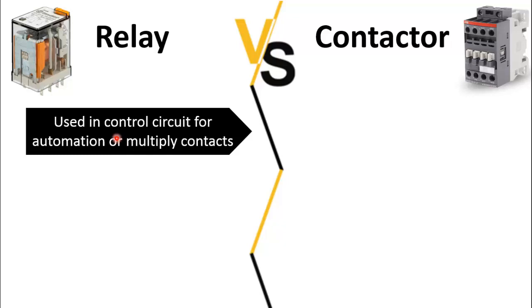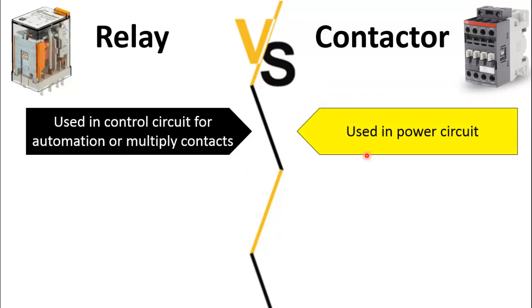A relay is used in control circuits for automation and also to multiply the contacts — you can have multiple normally closed and normally open auxiliary contacts in a relay. In order to use it in control logic or to multiply the contacts, you can use a relay. Whereas a contactor is used in a power circuit to switch a heavy load.